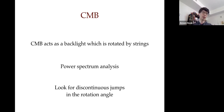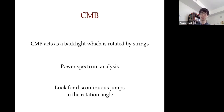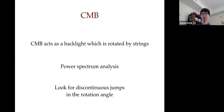You can literally look at the polarization map and see a discontinuity, then track it along a whole line in the sky — that's a string. So there are two basic ways to look: in momentum space (Fourier/l-space) and in position space (angular space).